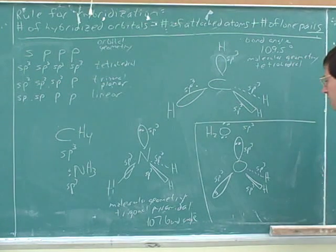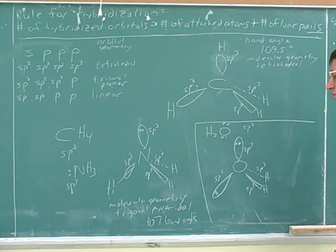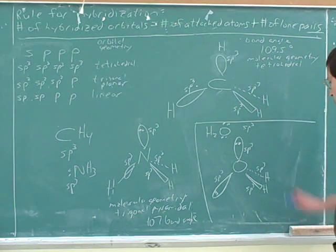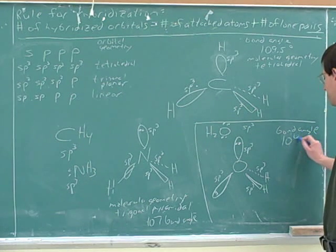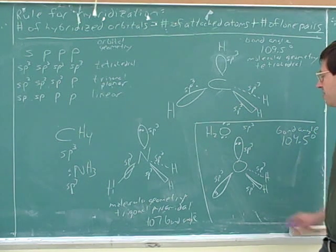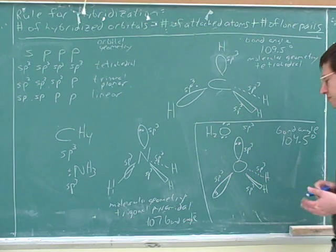What do you think about the bond angle here? Should it be 107, bigger than 107, or less than 107? Less than. 104.5. Oh, you remember that. Good. Because now that there's two very unsociable lone pairs, these are going to cluster even closer to each other.